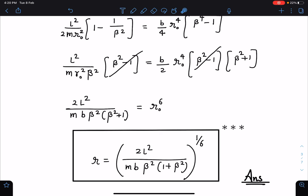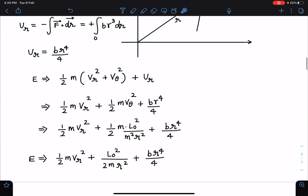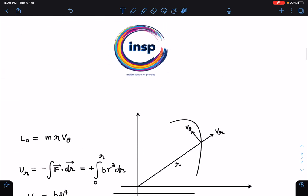R is equal to (2L²)/(MBβ²)(1 + β²) to the power 1/6. This is going to be the final answer. Congratulations to all the students who could give this correct answer. This is very much possible that we can get this type of question in JEE Advanced exam.